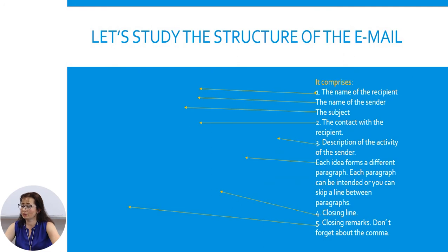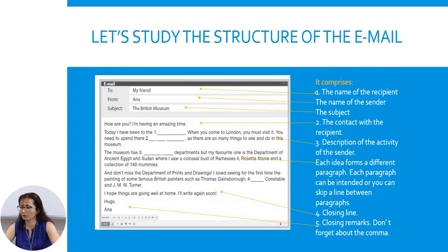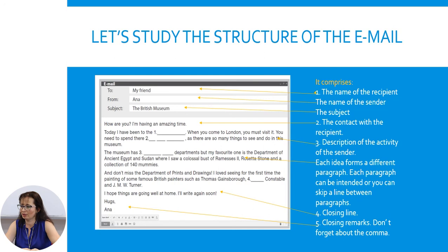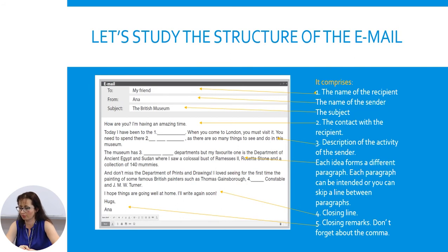Let's study the structure of an email in order to be able to write an email yourself. As you see from the slide, it comprises the name of the recipient, the name of the sender, the subject, then the contact with the recipient — which forms a paragraph — and a description of the activity of the sender, which forms another paragraph. Each idea forms a different paragraph. Each paragraph can be indented or you can skip a line between paragraphs. It's really important to know. And then you have to come with a closing line, followed by closing remarks. Don't forget to use a comma.